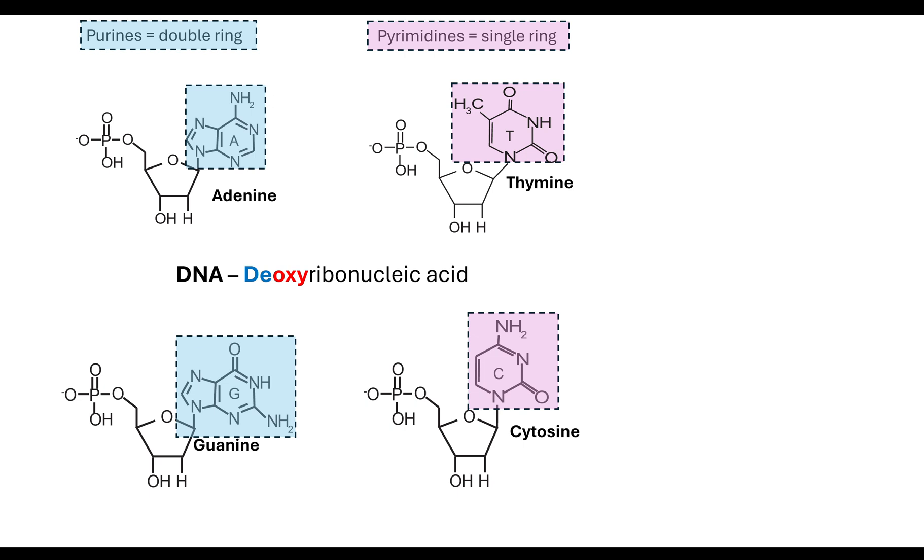We also have the ribose pentose sugar, and we can have a ribose nucleotide. The only difference in the ribose nucleotide is they have a ribose pentose sugar, but also they do not have thymine. Instead, they have the pyrimidine which is called uracil. So RNA can be made up of adenine, guanine, cytosine, but they have uracil instead of thymine. Another distinguishing feature between a DNA nucleotide or an RNA nucleotide is that nitrogenous base.